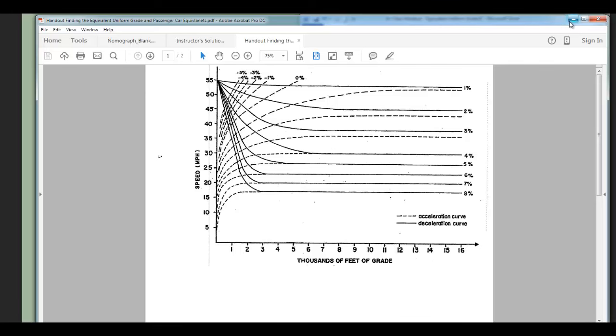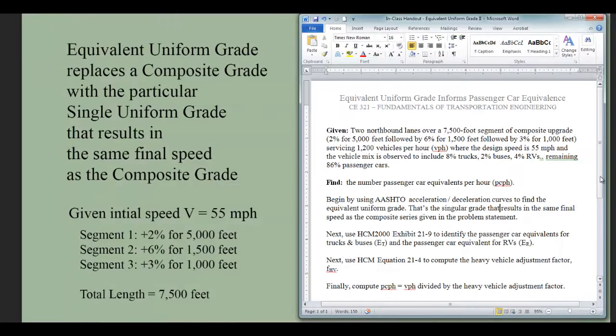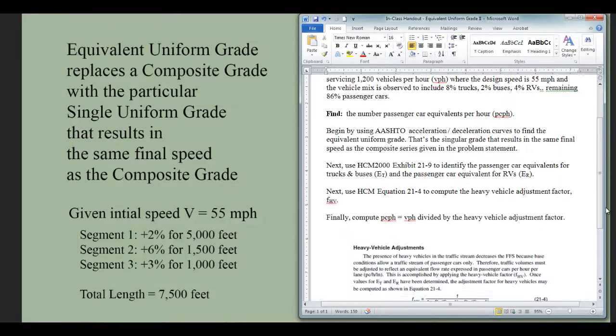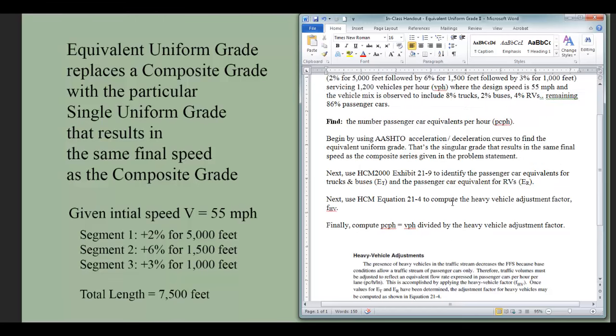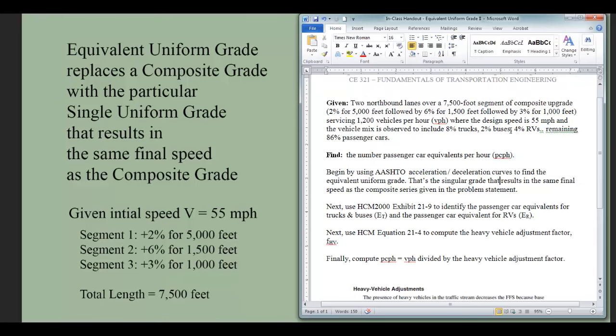Once we've done that, we are in a position to do further analysis that is more appropriate for the unit we're heading into, which is to do further calculations for that passenger car equivalent, ultimately figuring out how many passenger cars worth of demand I have in a mixed vehicle fleet that includes trucks, buses, RVs, and passenger cars. We're content here to be comfortable finding an equivalent uniform grade when we are faced initially with a composite grade.